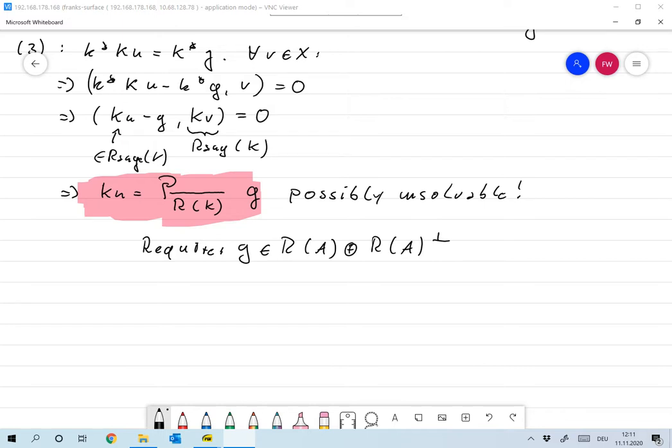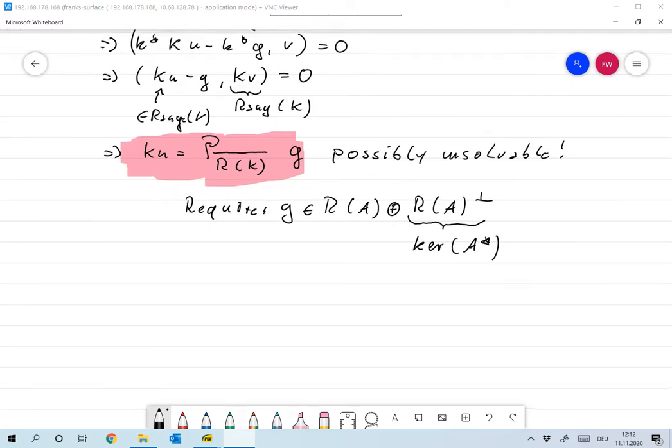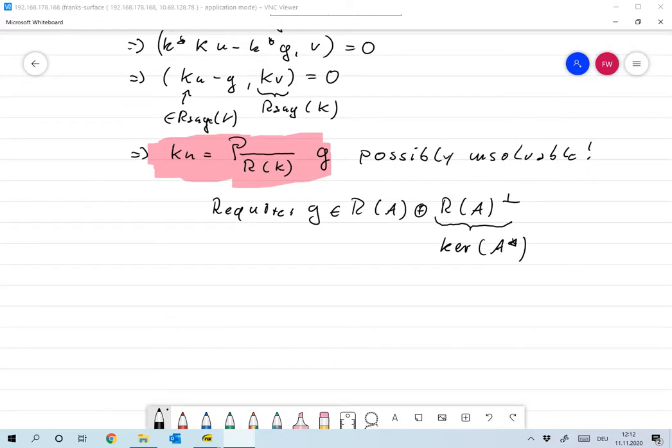I mean that's always true if we take the closure on the left over the range, but if we don't then that's the requirement. Now we have that the perp of the range of k according to our characterizations in the last video, this is the null space, it's the kernel of k adjoint. So we have the requirement that g is in the range plus the kernel of k adjoint. So we see that this normal equation is not always solvable if we go to infinite dimensional operators, and that's now the big difference to finite dimensional operators, because then we can always do without this closure and then everything becomes solvable immediately.